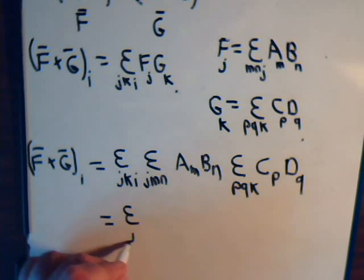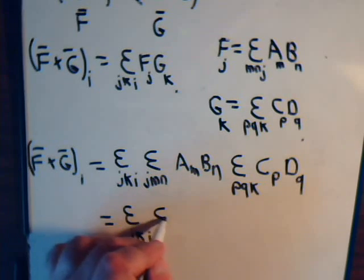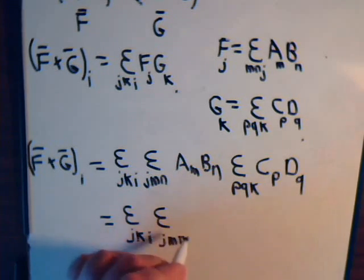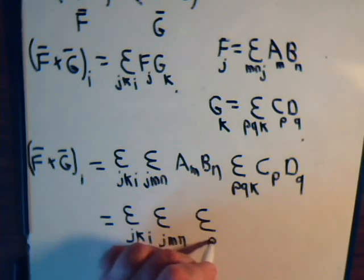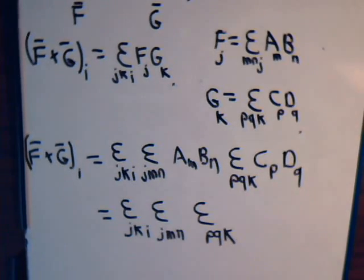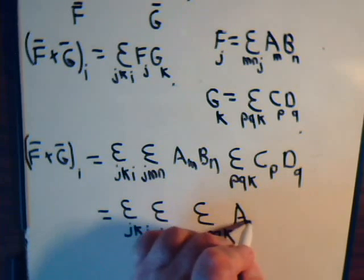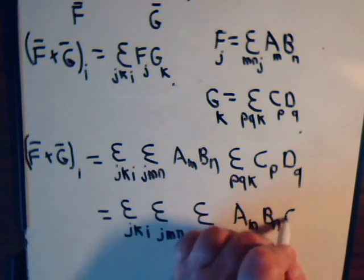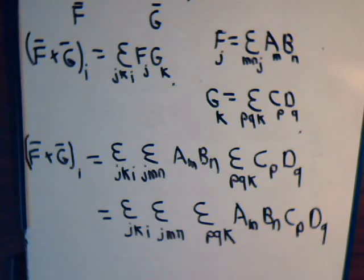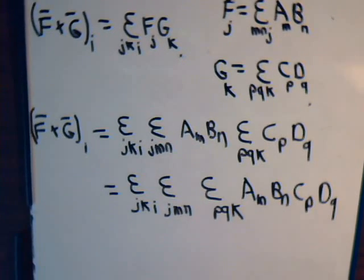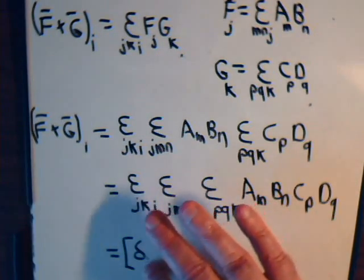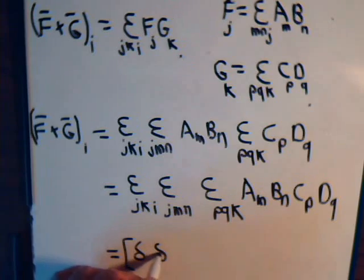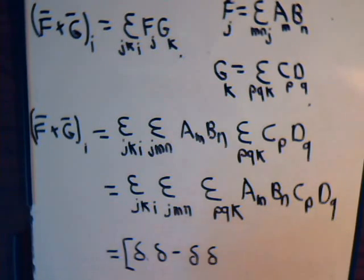So we can write it like this. Epsilon j, k, i, epsilon j, m, n, epsilon p, q, k. And our scalars. Now we're ready to use our identity. We know it will equal a pair of Kronecker deltas. Let's make a little bit more room. Minus a pair of Kronecker deltas.